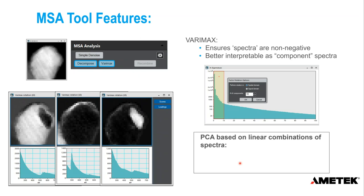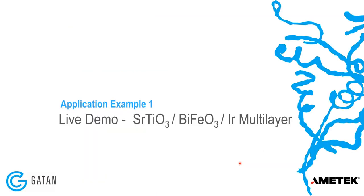One final point: PCA is based on linear combinations of spectra, which is really good for EDS where peaks are linearly independent. That's not always true for EELS, so when doing PCA on EELS data, we need to be a bit more careful about the processing. That's a good point to jump to the software.